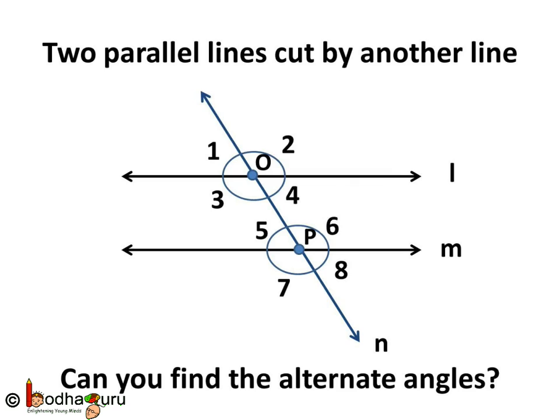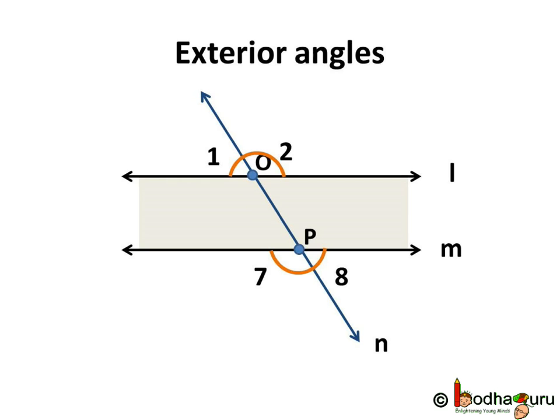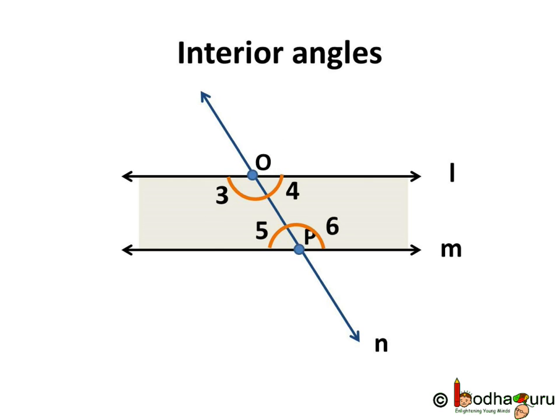Out of these eight angles, can you find the alternate angles? For this, firstly we need to know what are interior and exterior angles. The area between the parallel lines is the interior of the parallel lines, and outside it consists of the exterior area. Angles 1, 2, 7 and 8 all lie in the exterior area, so they are exterior angles. The other four angles — 3, 4, 5 and 6 — are in the interior of the two parallel lines, and we can easily say these are interior angles.